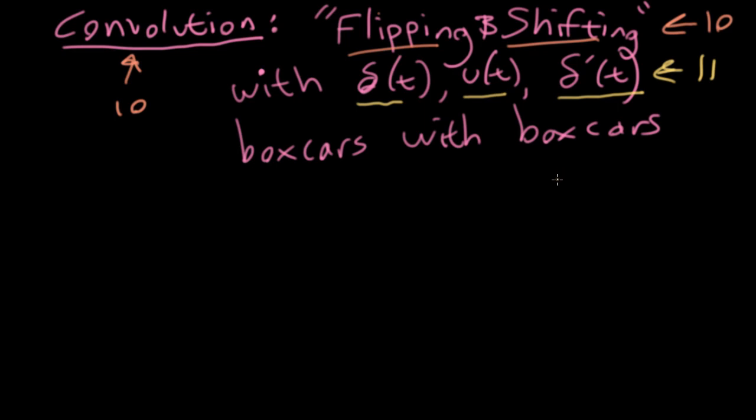And today we're going to look at a case of doing a full five region convolution again, but today we're going to look at convolving a particular kind of shape with another version of the same kind of shape called boxcars. And we'll see that the answers have a particular pattern that we can just pull out of our pocket instead of having to do all of this flipping and shifting business from scratch each time.